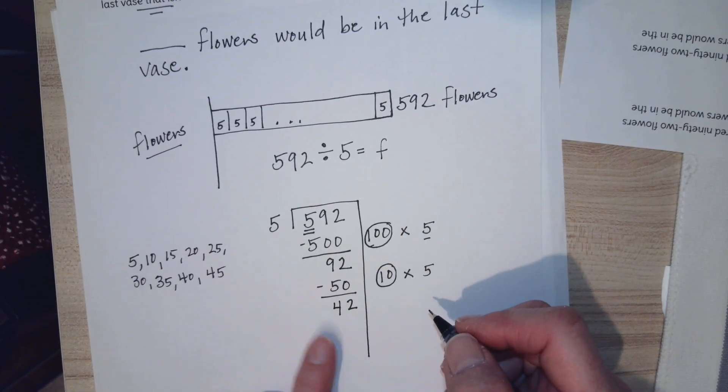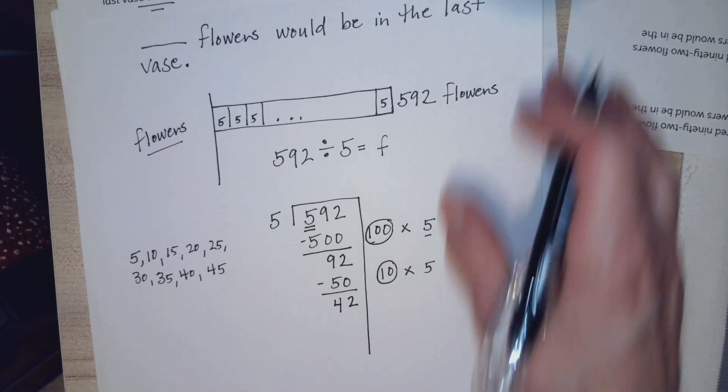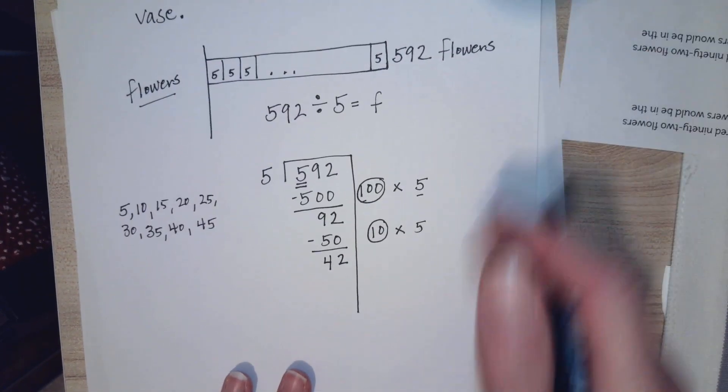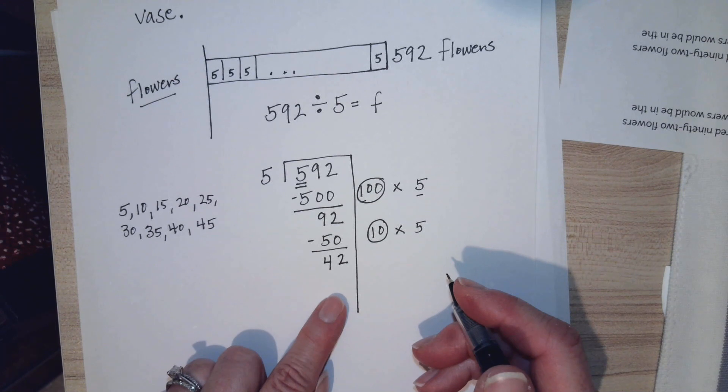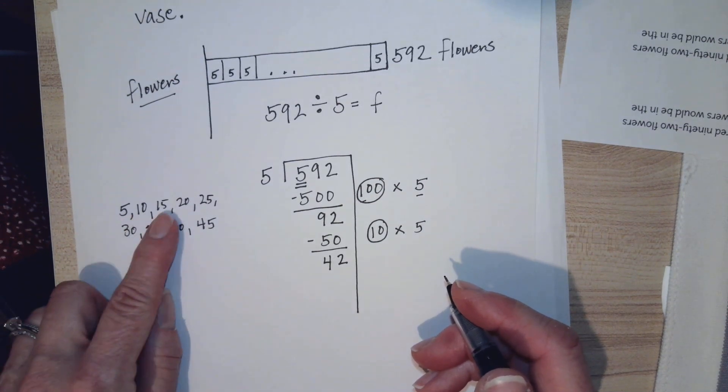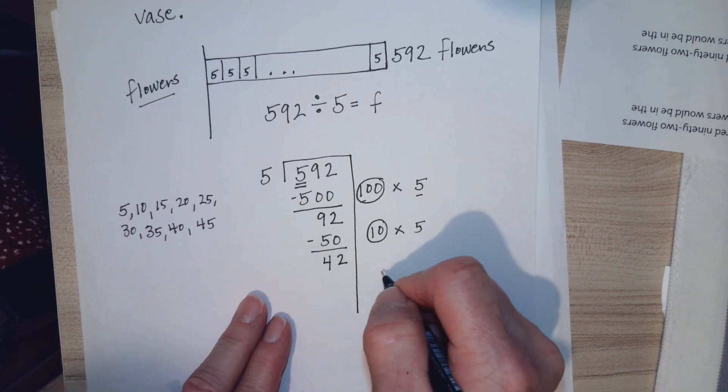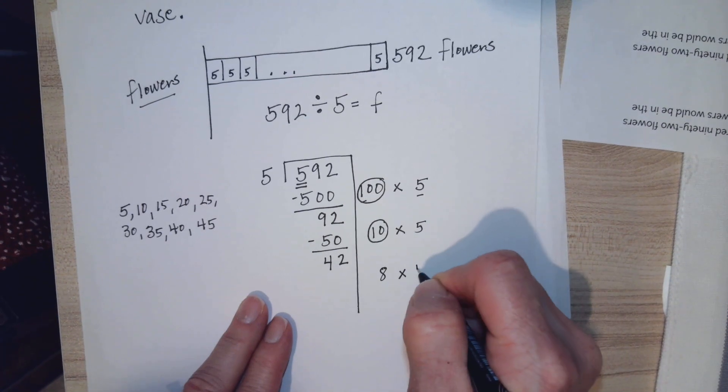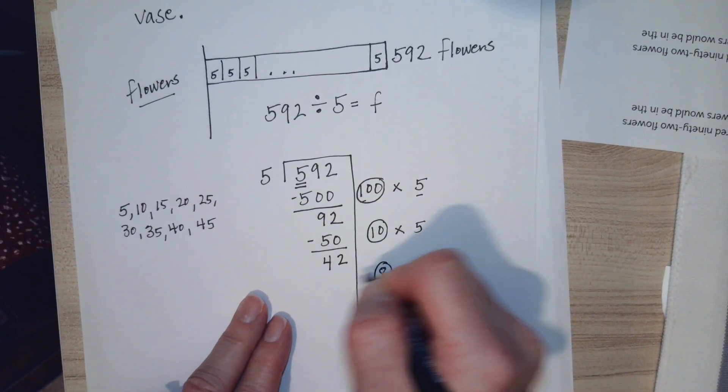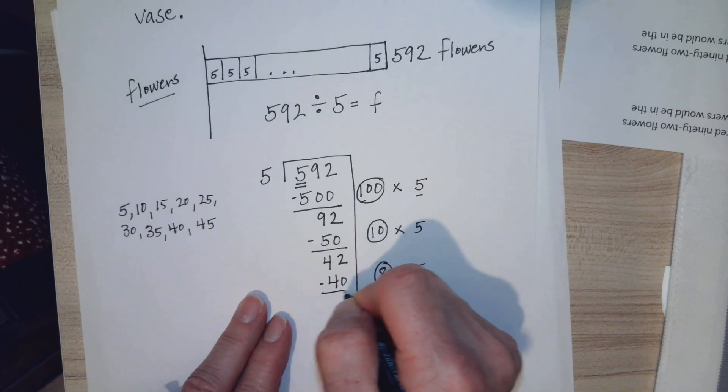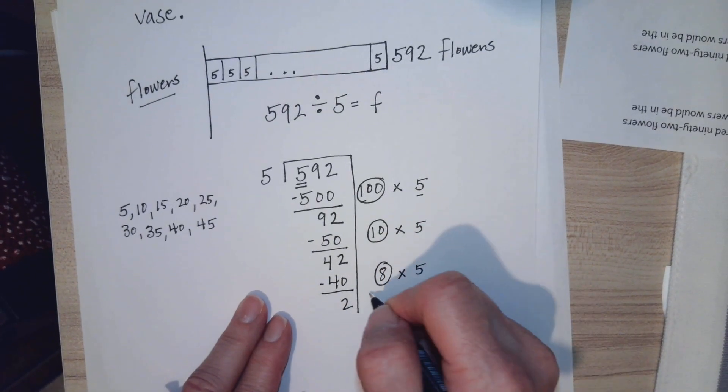So now think of what you know about 42 and 5. 5 times what will get us as close to 42 as we can without going over? 5 times 8 is 40, and I subtract and get 2.